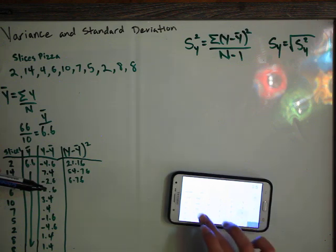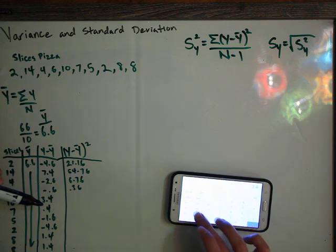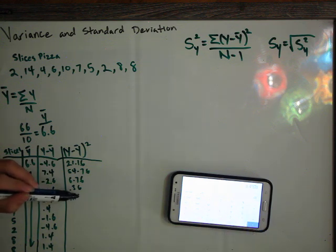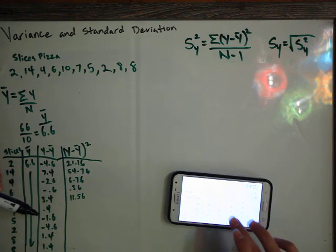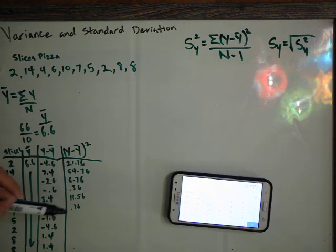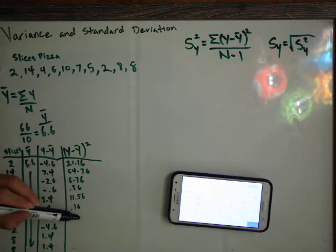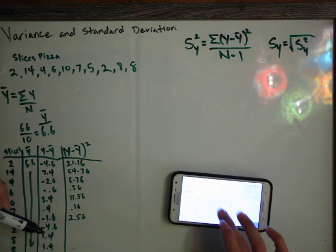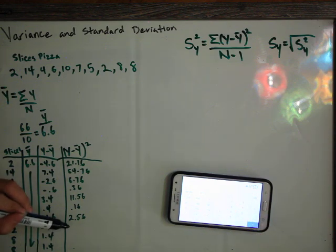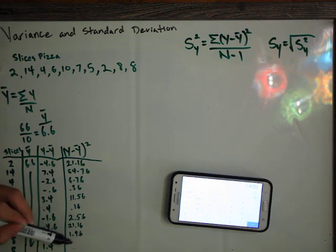So 0.6 squared is 0.36, 3.4 squared is 11.56, 0.4 squared is 0.16, negative 1.6 squared is 2.56, 4.6 squared is 21.16, and 1.4 squared is 1.96, and we have that twice.